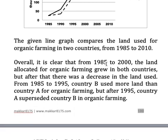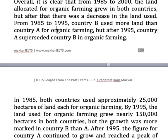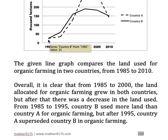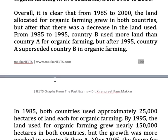In 1985, both countries used approximately 25,000 hectares of land each for organic farming. You can see this is approximately 25,000 hectares — the word 'thousand' is very important. Both countries used 25,000 hectares.